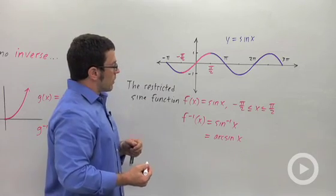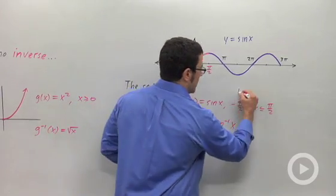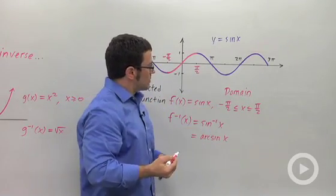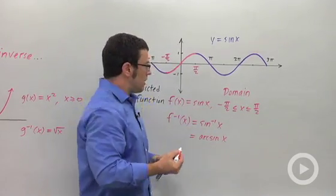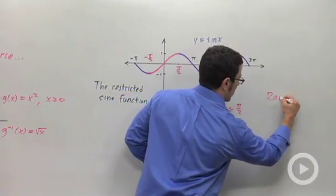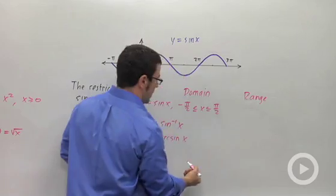Now, one thing to remember: if the domain of the original function is between minus pi over 2 and pi over 2, the range of inverse sine is going to be between negative pi over 2 and pi over 2.